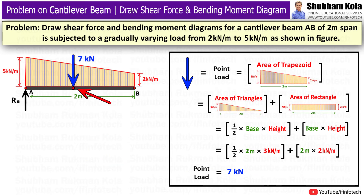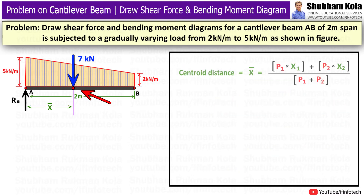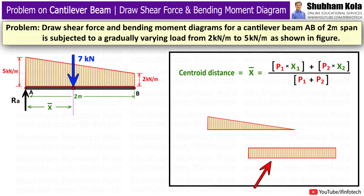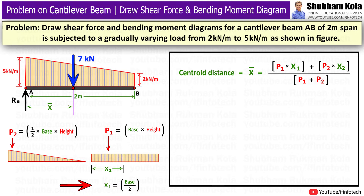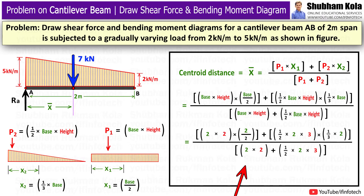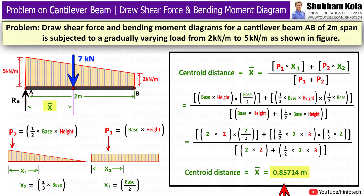This converted point load will act at the centroid of the trapezoid. Next, we have to find out the centroid distance of this trapezoid using the standard formula, where p1 is the area of the rectangle and p2 is the area of the triangle. x1 is the centroid distance of the rectangle, which is half of the base, and x2 is the centroid distance of the triangle from the left end, which is one-third of the base. So x1 = ½ × 2m and x2 = ⅓ × 2m. By calculating, the centroid distance of the trapezoid equals 0.85714m.